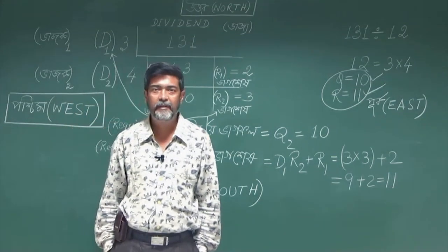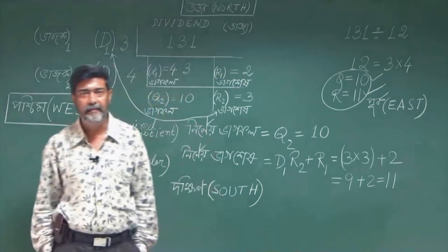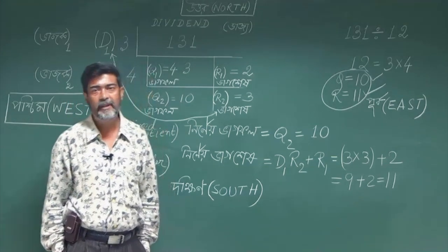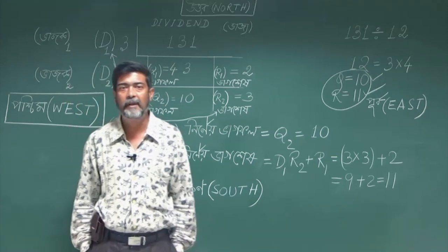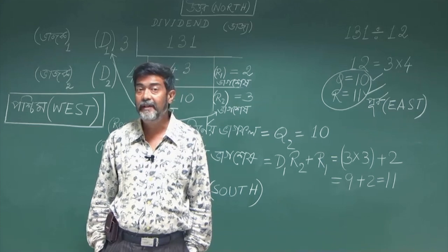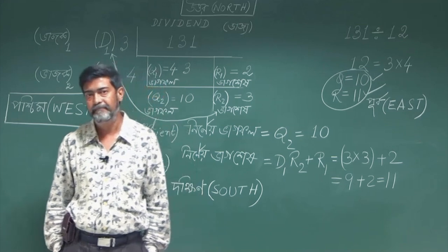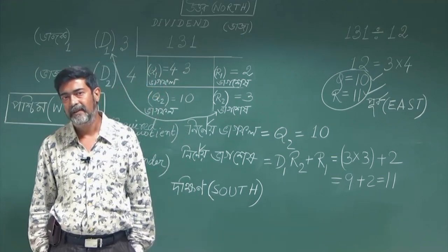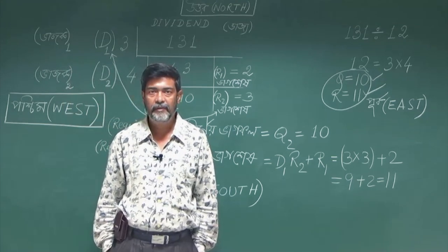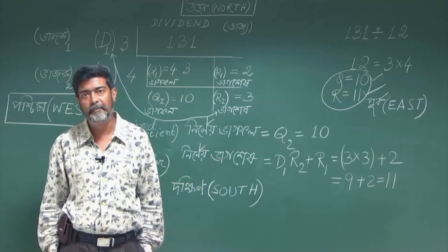Hello, respected instructors. We have seen in the last class that we can start with 3 into 4. We divided 131 by 3 for the first step and then divided the quotient thus obtained by 4.